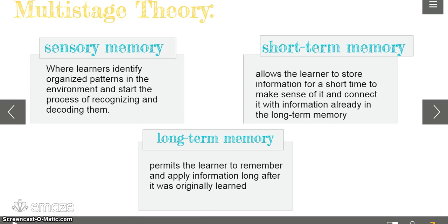Atkinson and Schreffen proposed this multi-stage, multi-store theory of memory, and this is the basis for the information processing theory. These three memory systems in the learner that this focuses on are the sensory, the short-term, and the long-term memories. These three memories are assumed to receive information from the environment and then transform it into storage and use it in memory performance.